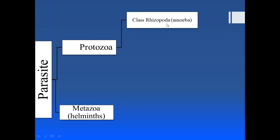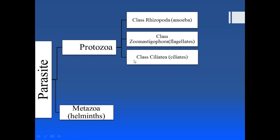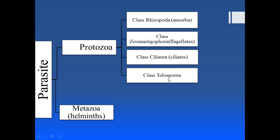The four classes of protozoa are: Class Rhizopoda (amoeba), which move with the help of pseudopodia — example: Entamoeba histolytica. Class Zoomastigophora (flagellates), which move with flagella — example: Giardia lamblia. Class Ciliata, which move with the help of cilia. And Class Telospora, which have no organ of locomotion.